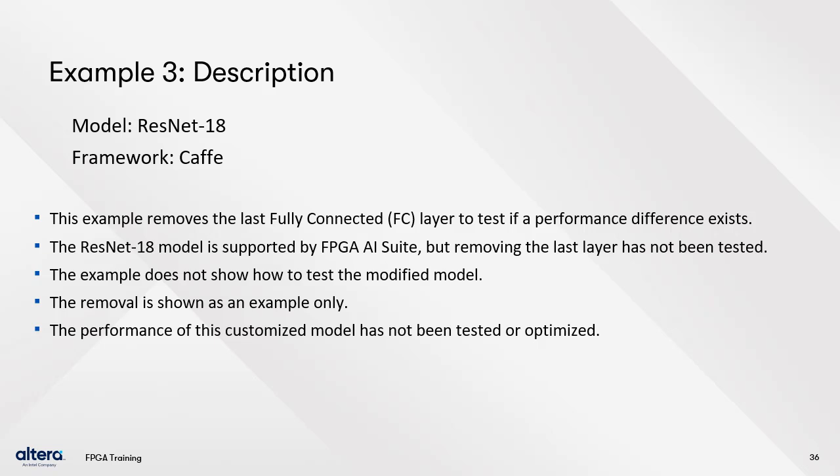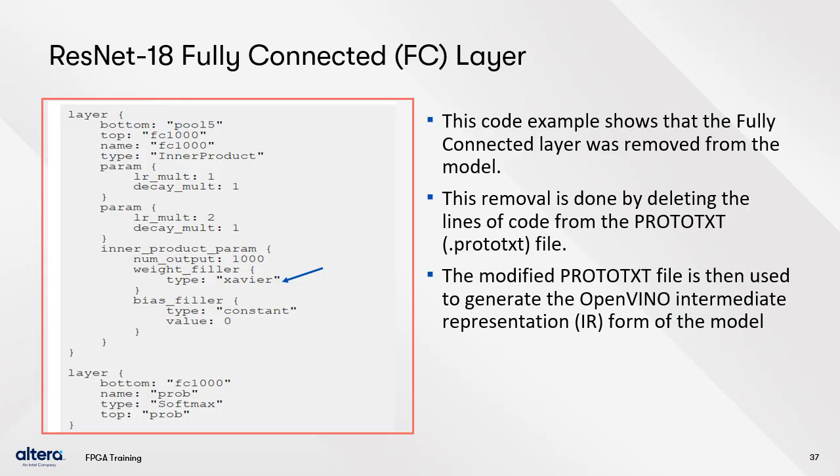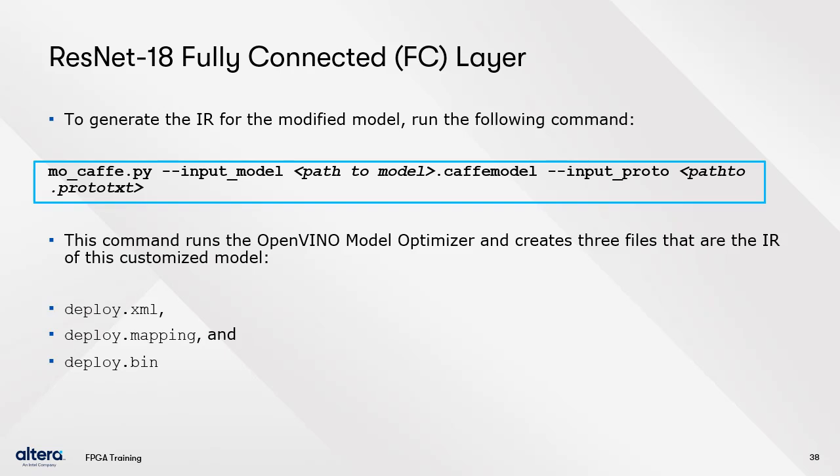Example three is based on the ResNet 18 model using the Caffe framework. This example removes the last fully connected layer to test if a performance difference exists. The removal is shown as an example only and has not been tested or optimized. The code snippet shows the fully connected layer removed by deleting lines from the prototext file. The modified prototext file is then used to generate the OpenVINO intermediate representation. Running the command creates three IR files: deploy.xml, deploy.mapping, and deploy.bin.